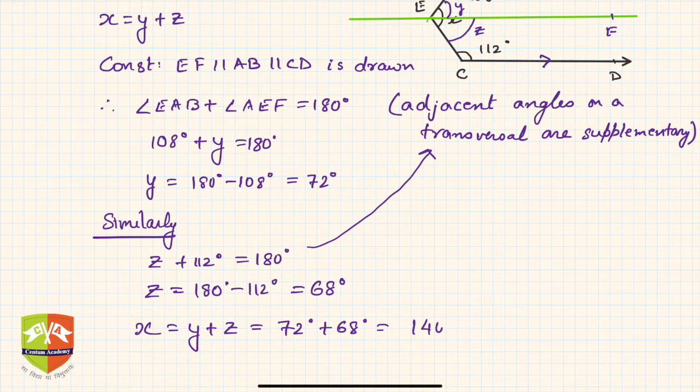So we found out the value of x. Why is this working? x equals y plus z we initially did this. From here, if you say this angle is y, this angle is z, and this angle was x, so x is y plus z. We found out y and z, we added them, and we got 140 degrees.